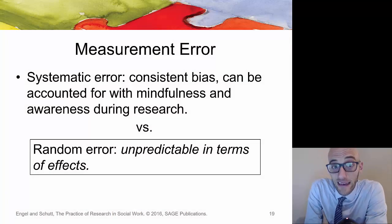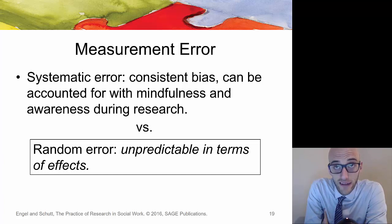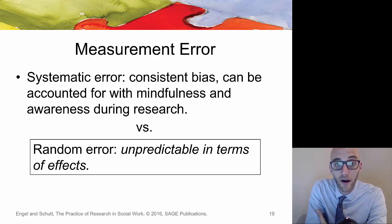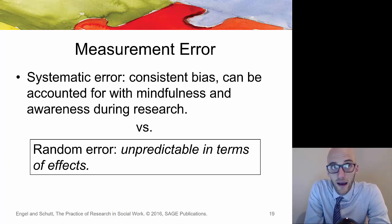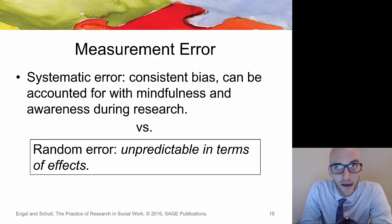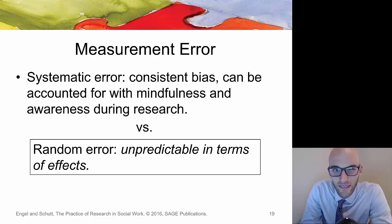The next section covers measurement error. Within social sciences there's a lot of room for errors in calculating and interpreting data, and we try to minimize that as much as possible. Systematic error is a consistent bias that can be accounted for — something within our control that we can change. Random error is more unpredictable: it could be the weather, somebody getting into a car accident before they get to your office — things you can't control but that still cause measurement error.